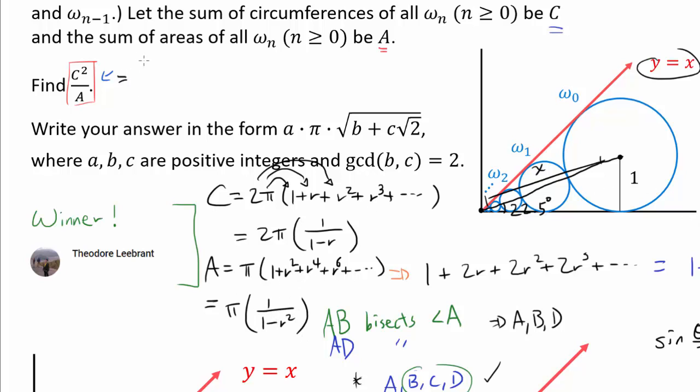So C² over A is we're squaring this and dividing by this. So when we square this, we get 4π² over (1 minus R)².